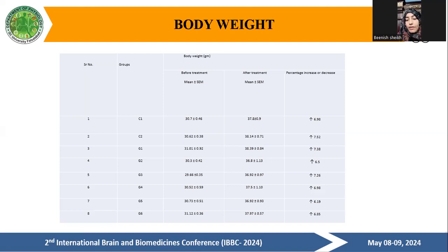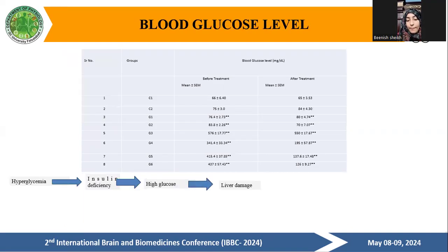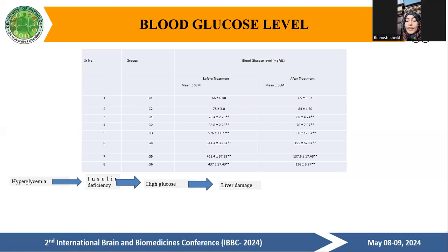Body weight before and after treatment: body weight also increases in diabetic mice. Blood glucose level before and after treatment: blood glucose level also increases in diabetic mice. Blood glucose level increases in blood but not in tissue due to insulin resistance, because gluconeogenesis is initiated.